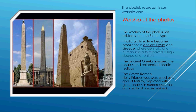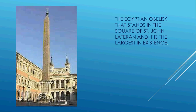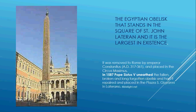Phallic worship has been going on since before the Stone Age and was very prominent in Egyptian and Greek architecture, where human sexuality received a high degree of attention. The Egyptian obelisk that stands in St. John's is the largest in existence and was moved to Rome in AD 317 by Constantine. Around 321 AD, Constantine made a lot of changes, uniting paganism with the Christian church.